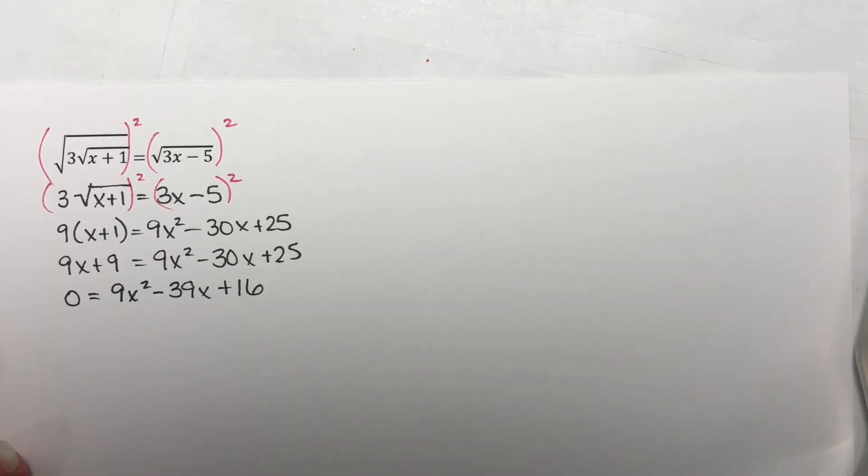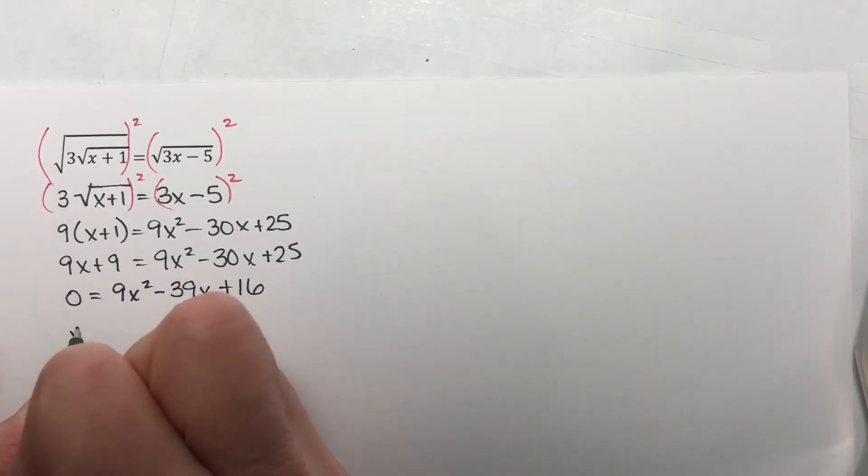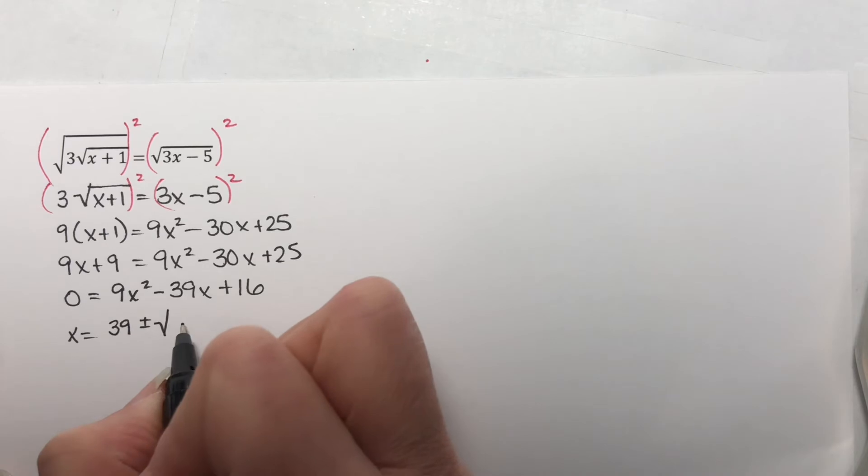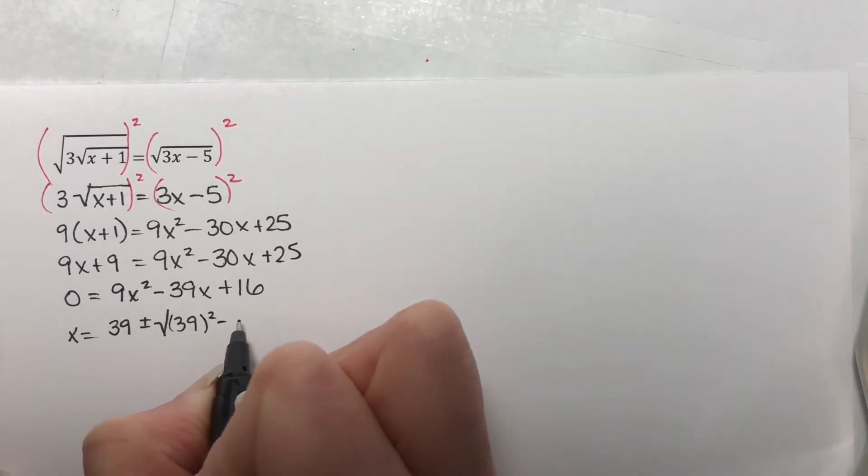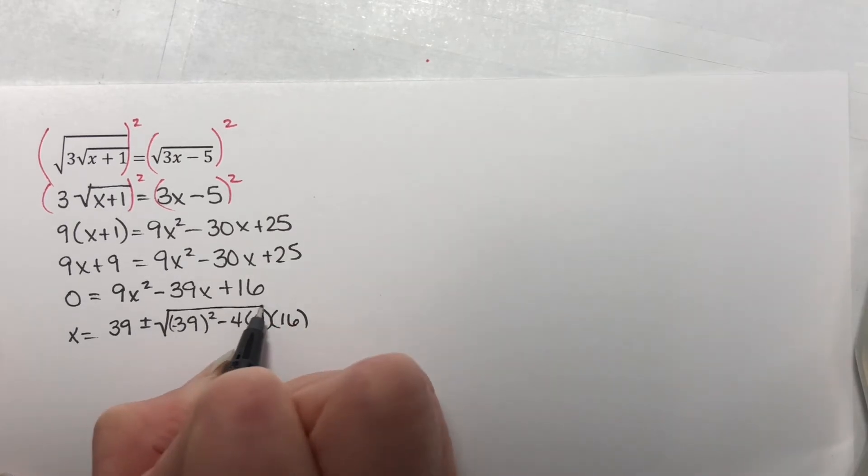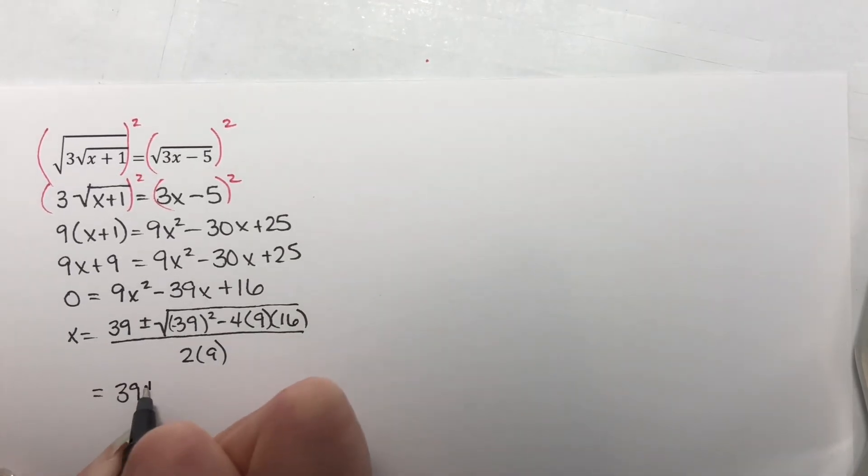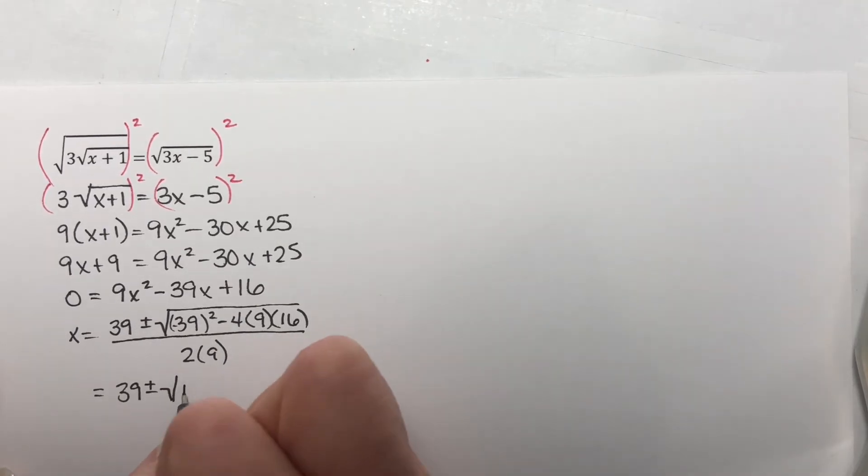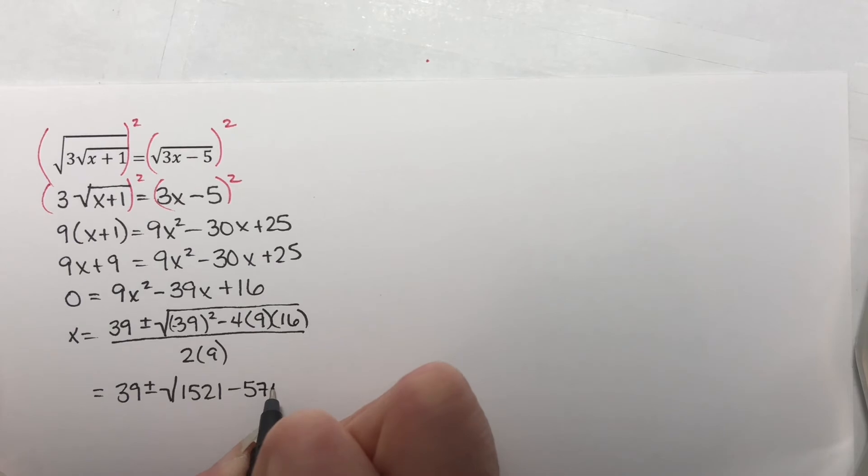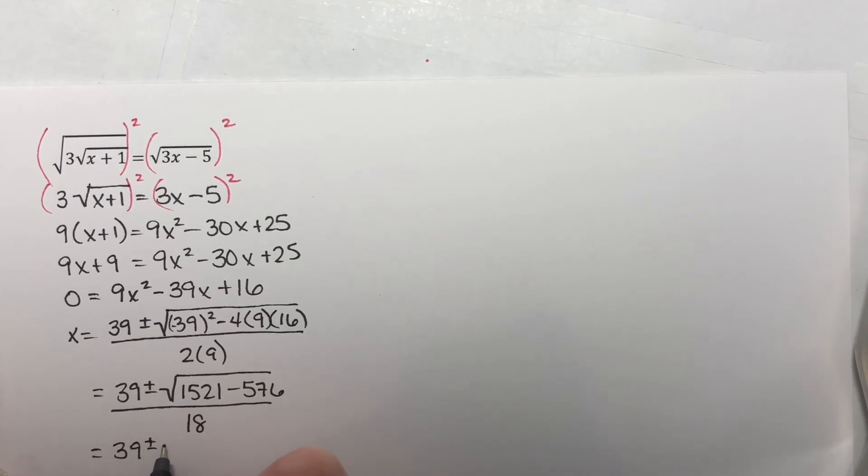So I'm going to go to the quadratic formula. x equals negative b, so it's going to be positive 39, plus or minus the square root of 39 squared, minus 4, that's technically negative 39 squared, 4 times a times c. This is all over 2 times 9. So I get 39 plus or minus the square root of 1,521, minus, if you multiply these together, you get 576. And this is over 18. So I have 39 plus or minus the square root of 945 over 18.